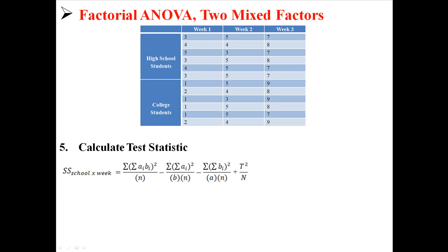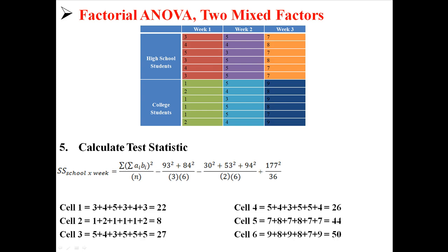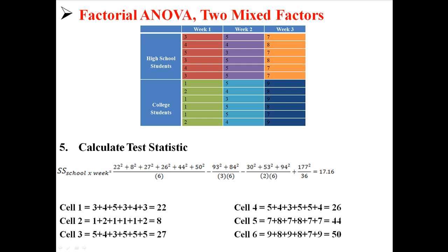Now we need to find the interaction of school and week. The last three fractions we already found, so we just need to find the first part. The top of that fraction asks us to take the sum of every cell — every A at every B — like A1 at B1, A1 at B2, and so forth. We find our six sums: 22, 8, 27, 26, 44, and 50. We square all of those, add them together, and divide by N, which is 6. Doing all of this, we find a sum of squares for the interaction of 17.16.